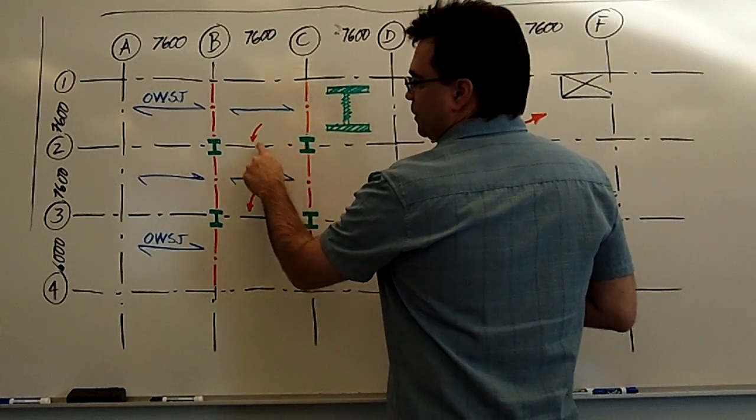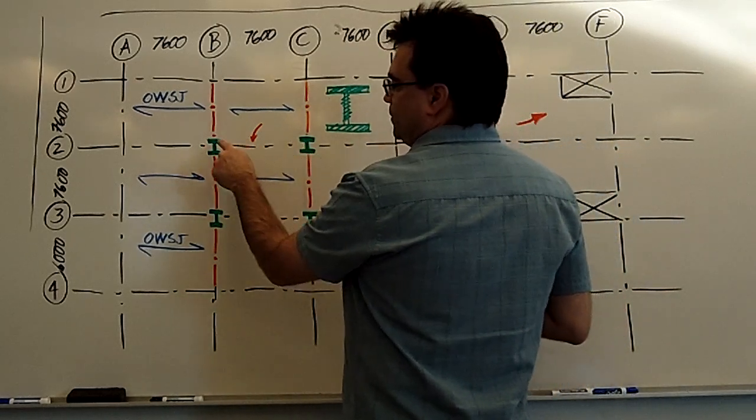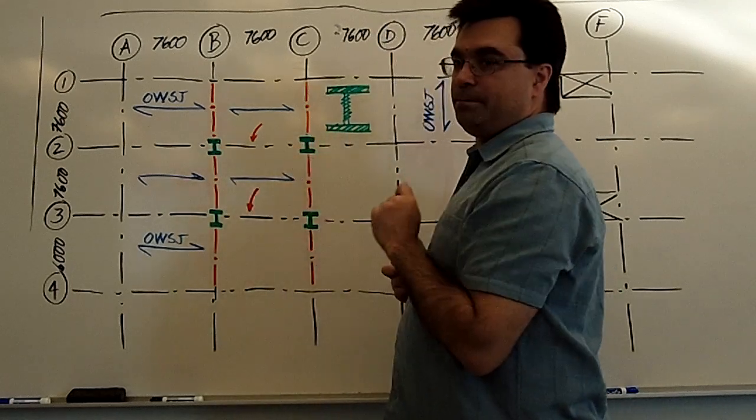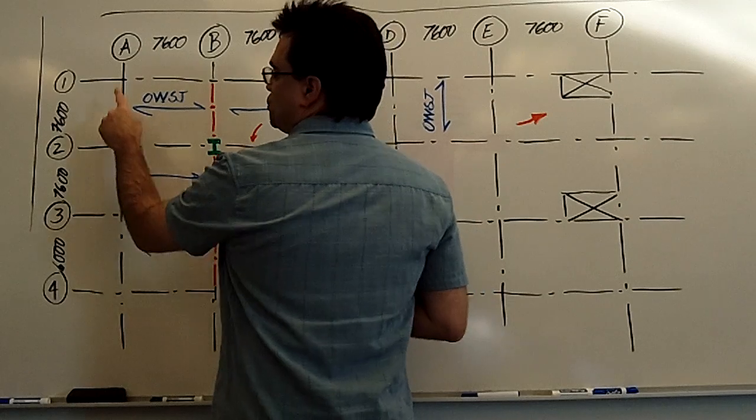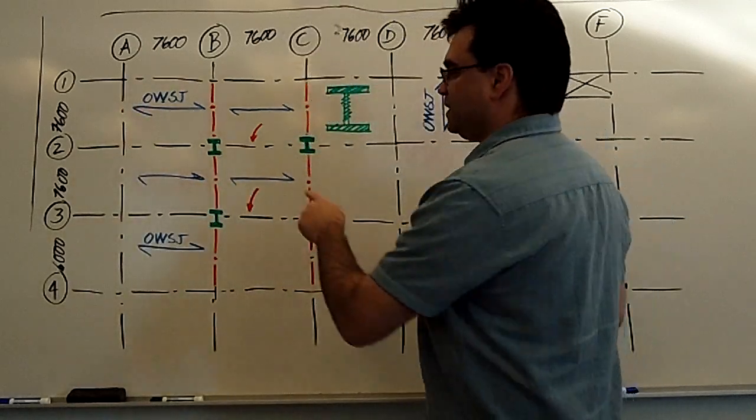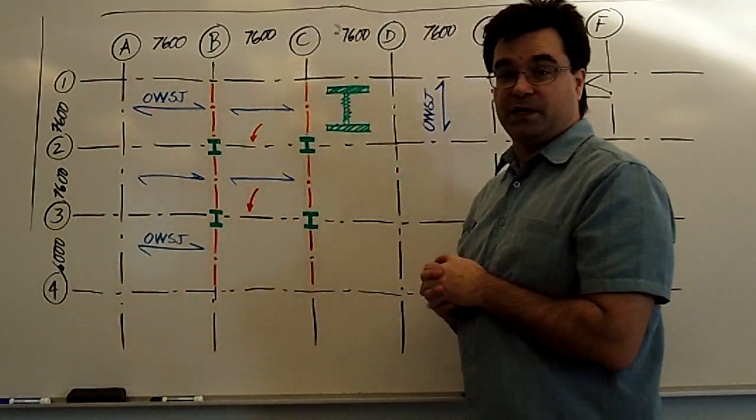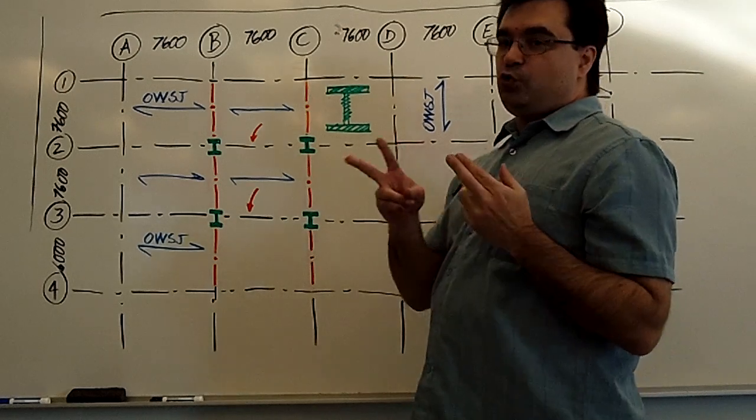But what's happening here along this grid line between this column and that column, or here along this grid line between this column and the exterior CMU wall? Same here, same there, right?